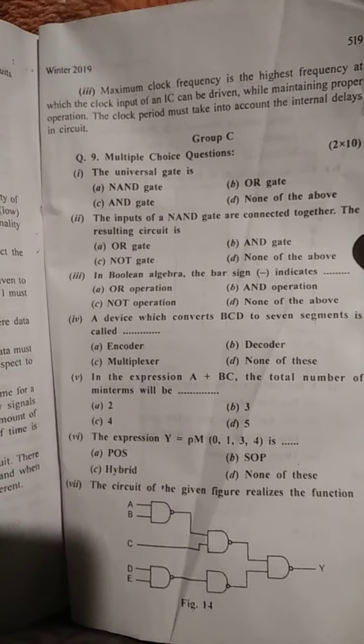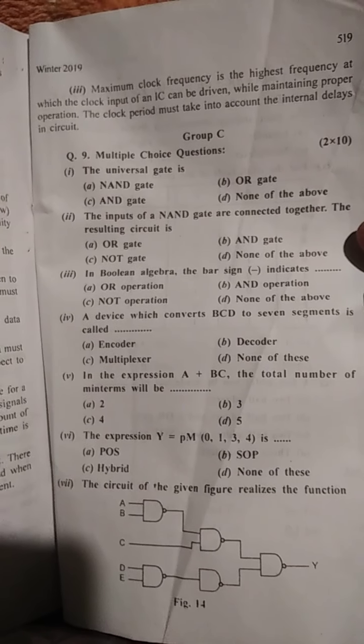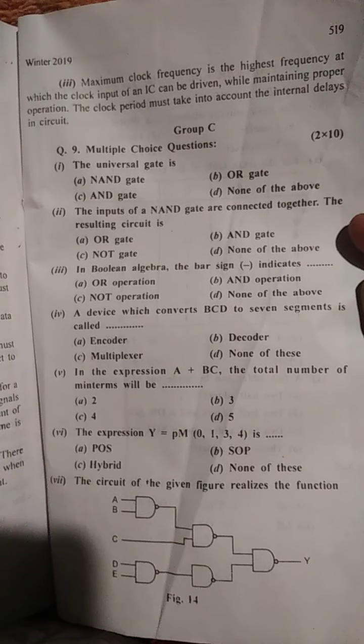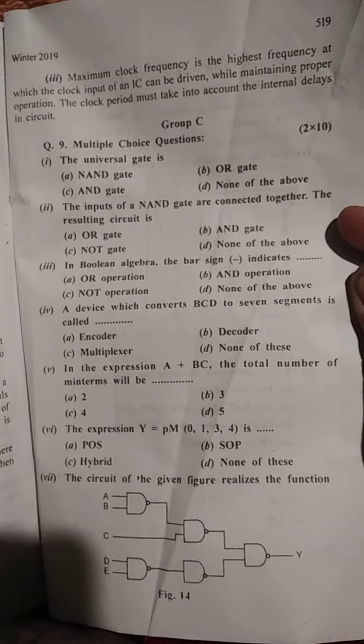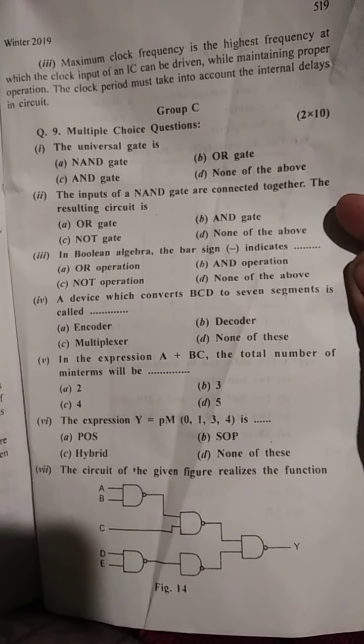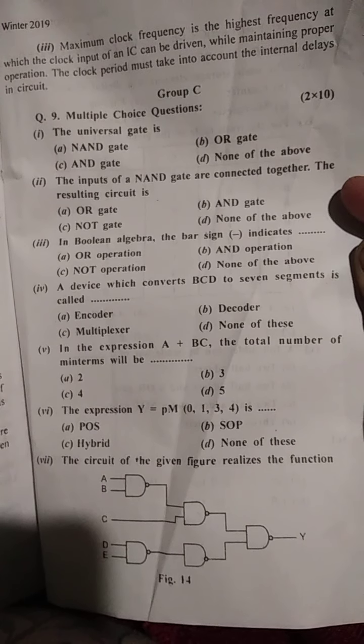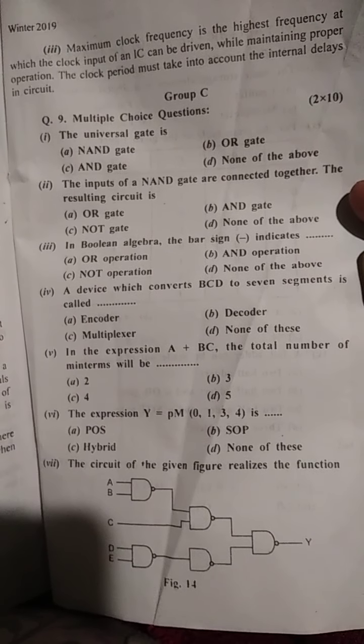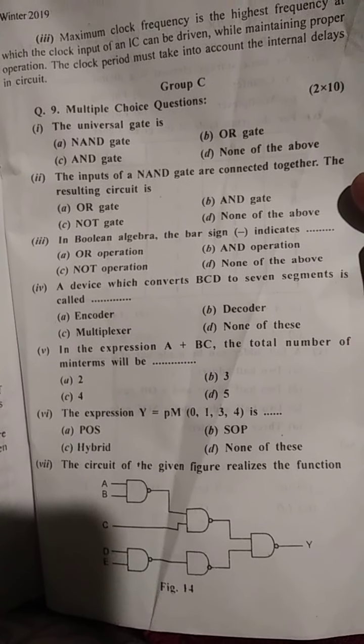This is Winter Section 2019 Pulse and Digital Circuit Question Paper, Group C, Part Question Number 9. The universal gate is NAND gate.